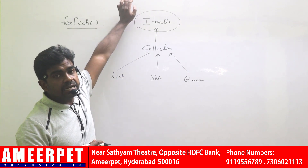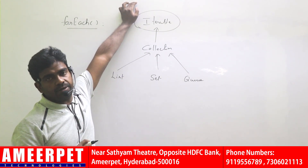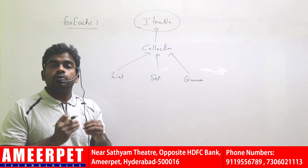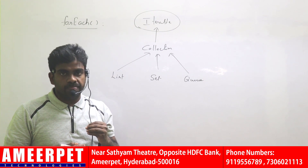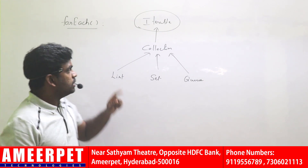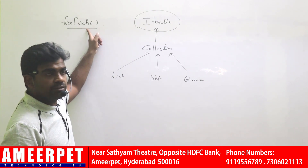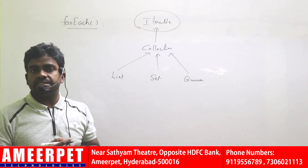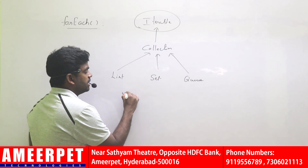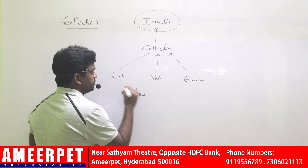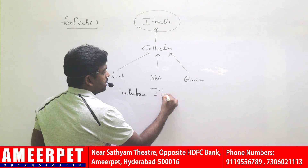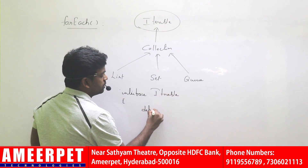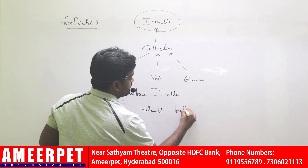Before JDK 8, inside an interface it was only allowed to define abstract methods. Since JDK 8, it is allowed to define methods which have a body. The main purpose was just to define the forEach method inside the Iterable interface. So inside the Iterable interface, they defined the default method called forEach, and they defined the logic inside it.